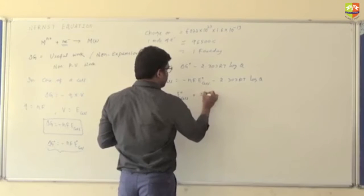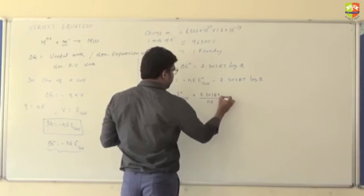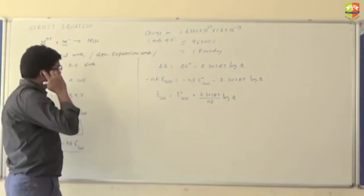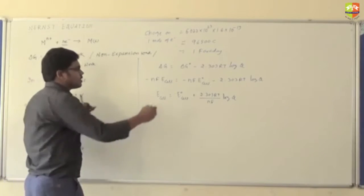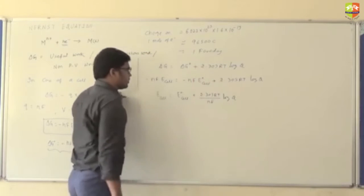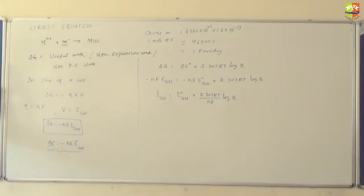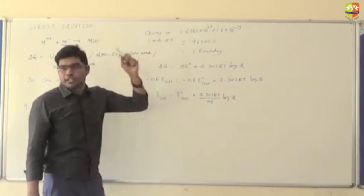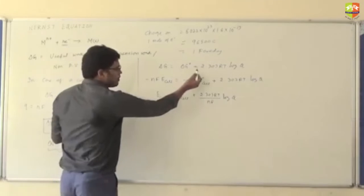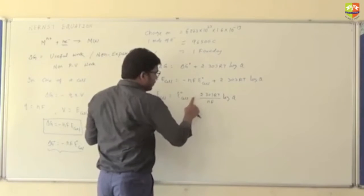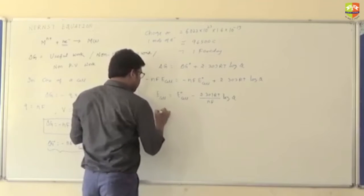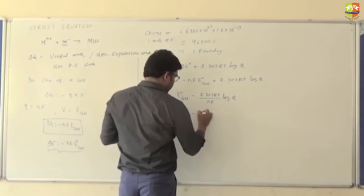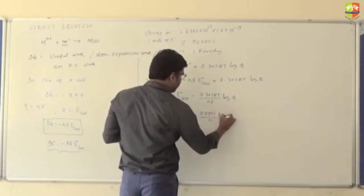When equilibrium is applied, delta G is 0, Q equals Kc, and delta G° becomes minus 2.303RT log Kc. We have a plus sign here, so when you divide by minus nF, it becomes a minus sign. So, E cell equals E° cell minus 0.0591 divided by N, log of Q.